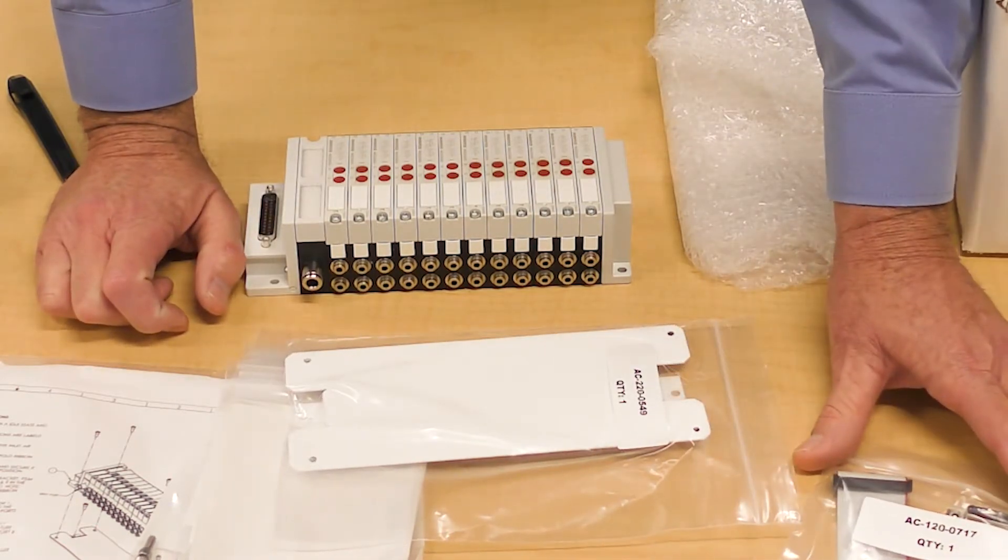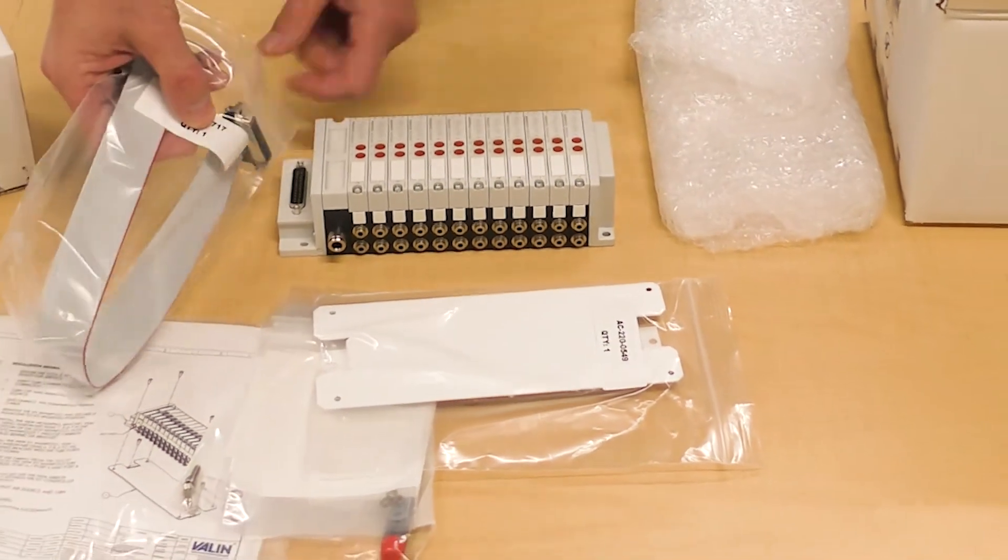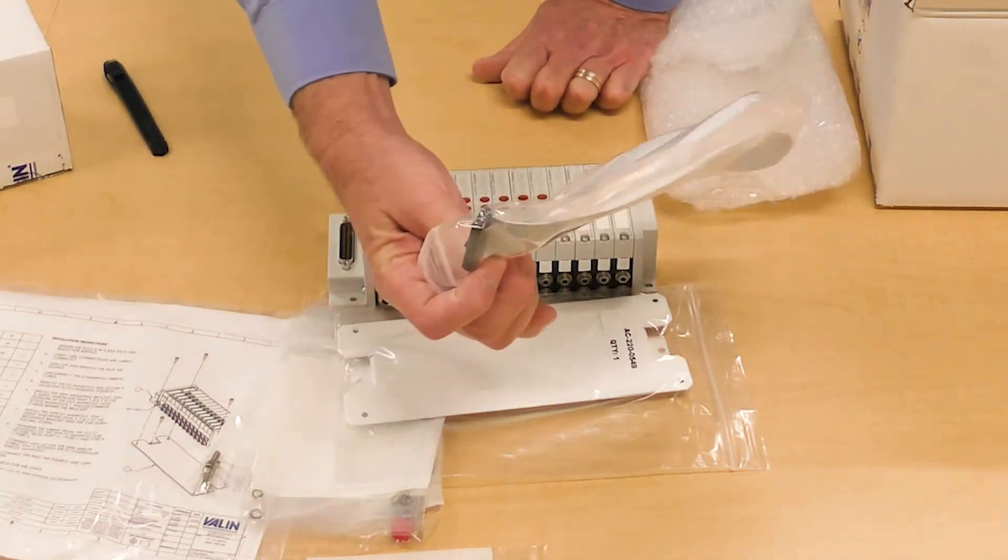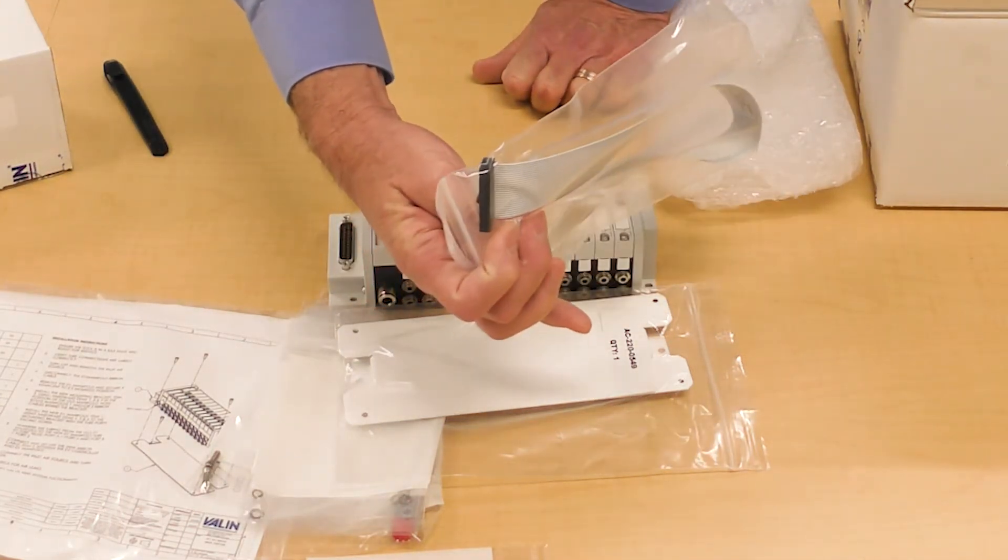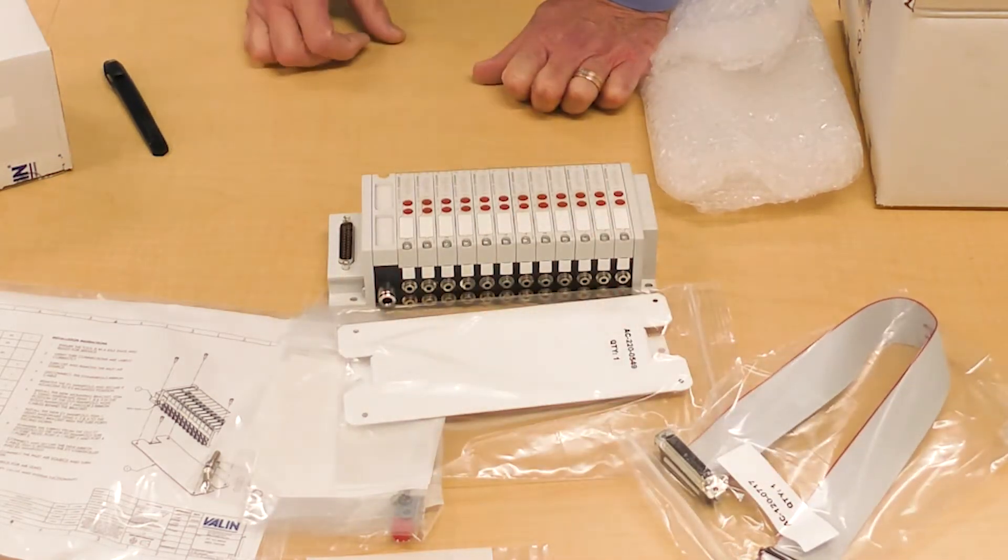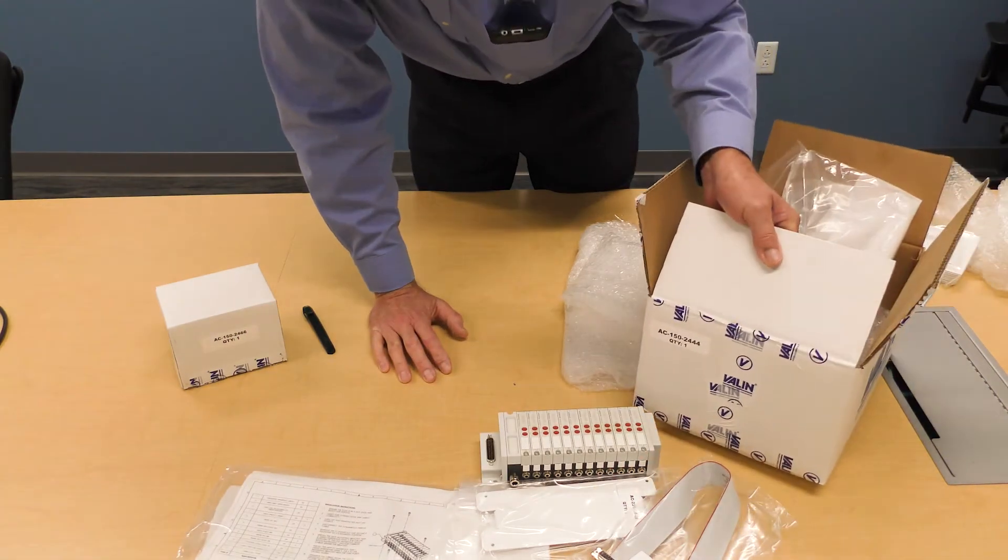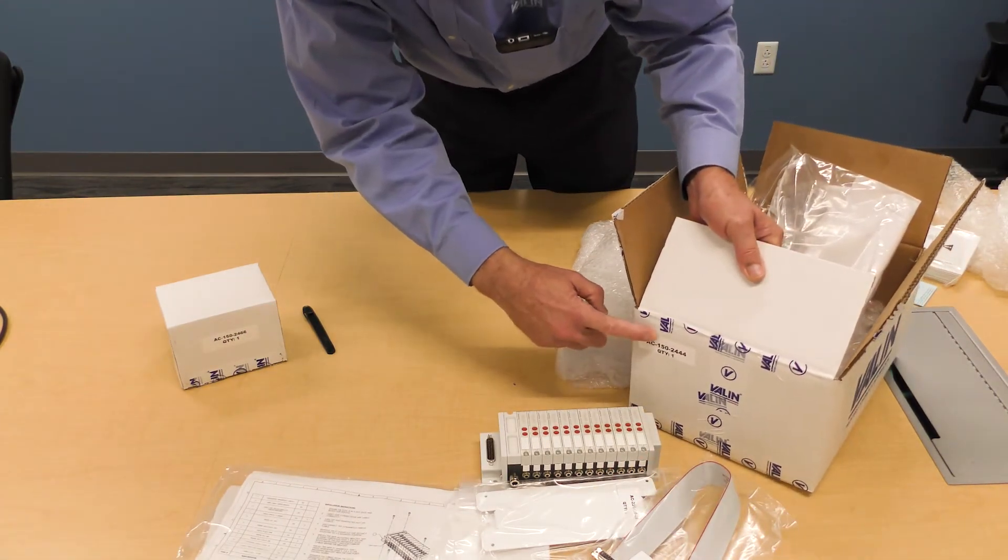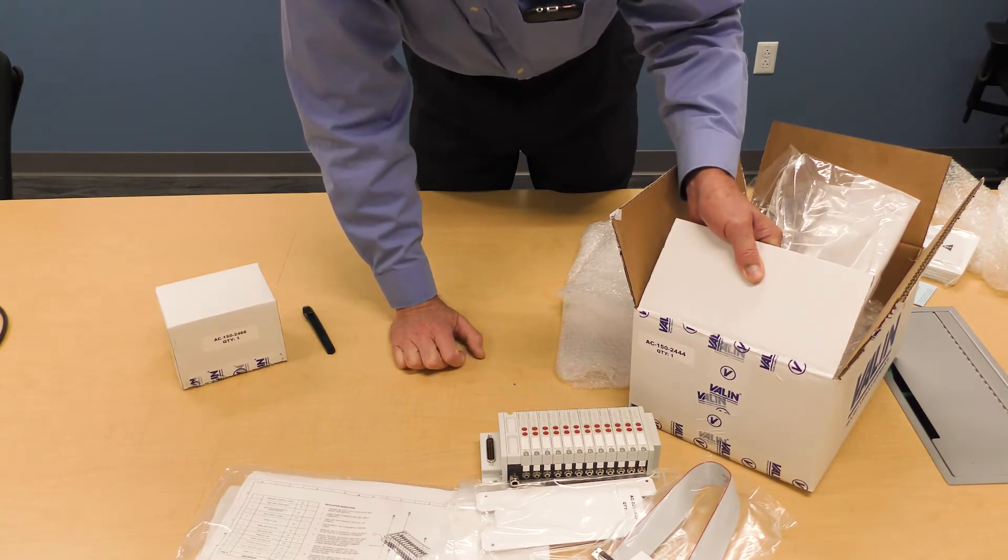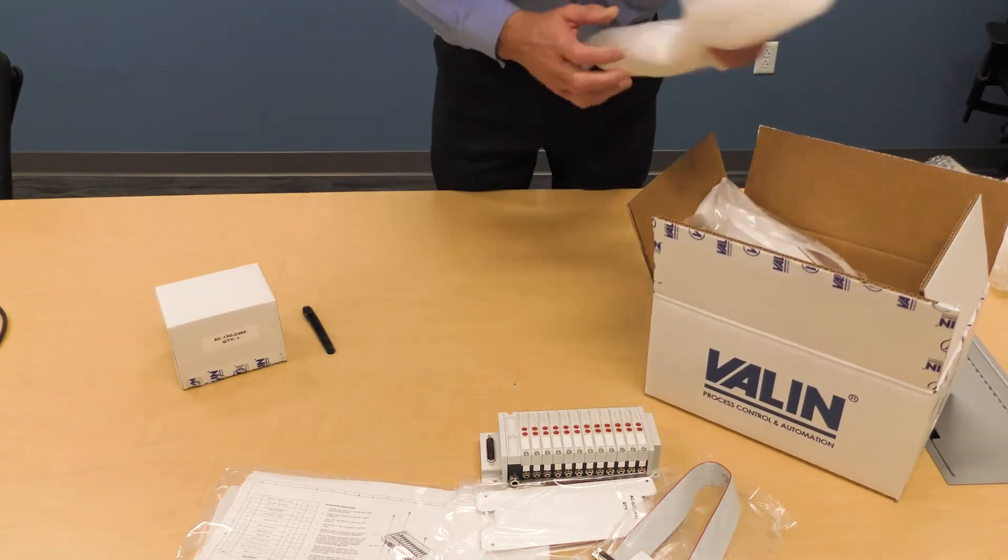Here is our electrical cable. The D-sub end connects to the manifold. This IDC 26 position connector will connect to the machine in its normal fashion. So that is AC-150-2444, a Centura gas box replacement manifold kit from Valen Corporation. Thank you Valen, that's great.